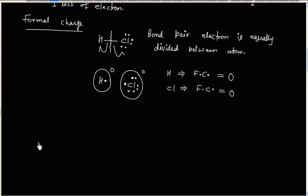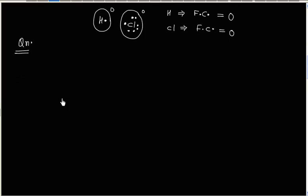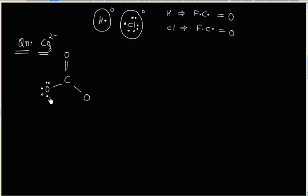Let us take another example. We have a Lewis dot structure for the molecule CO₃²⁻. We need to calculate the formal charge and oxidation number of oxygen and carbon.